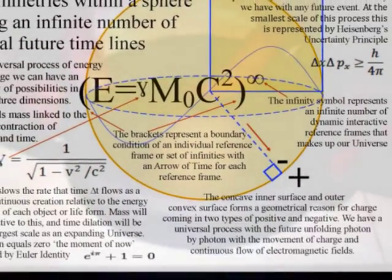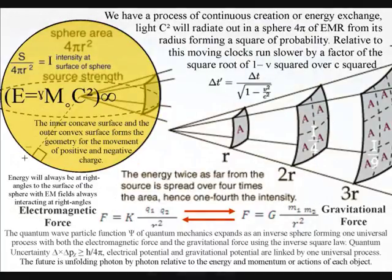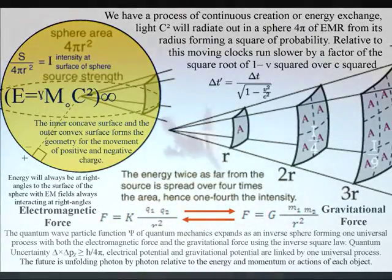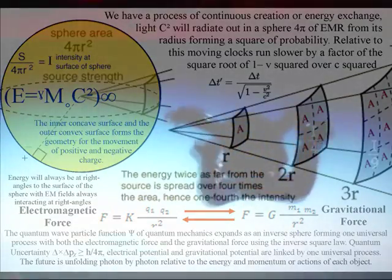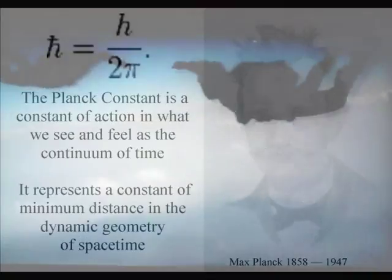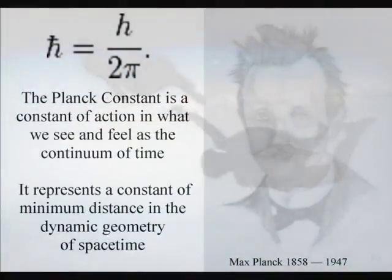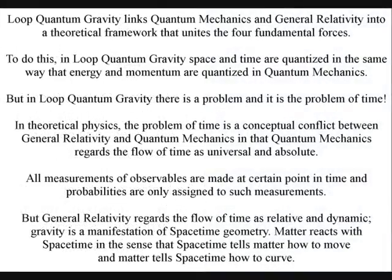All the advantages of finite loops can be maintained in a process of spherical symmetry forming and breaking, with an emergent future unfolding relative to the energy and momentum of each object or life form. The Planck constant is a constant of action, or a constant of minimum distance, and a dynamic geometry that forms what we see and feel as the passage of time.